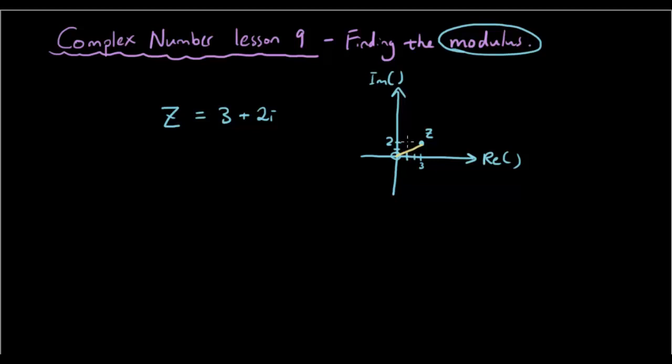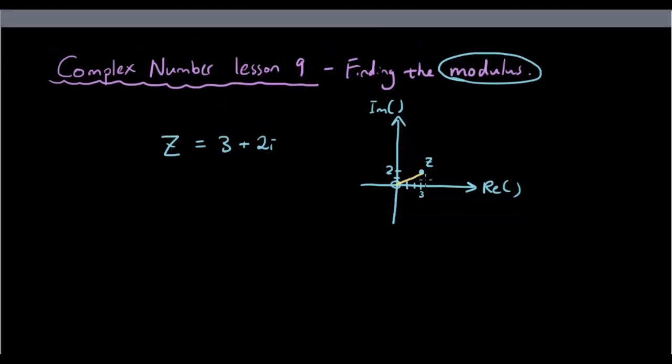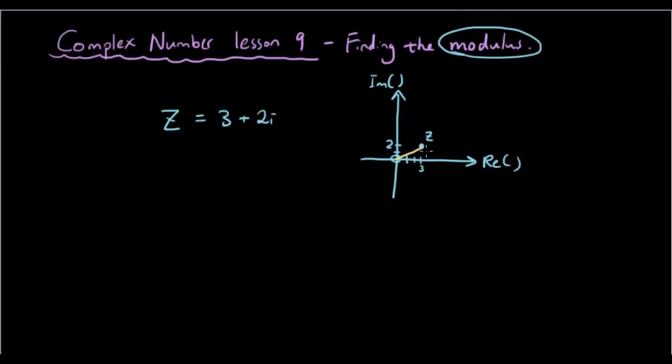And if you remember Pythagoras theorem, if you pretend that this is a right angle triangle and we have the right angle here, then we can say this is a, this is b, this is c, and we can figure out what c is from using Pythagoras, which is a squared plus b squared.